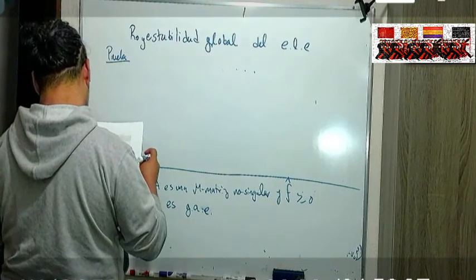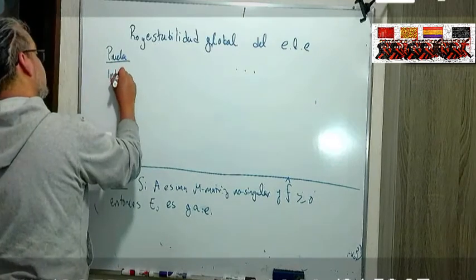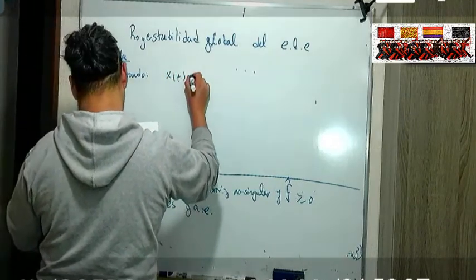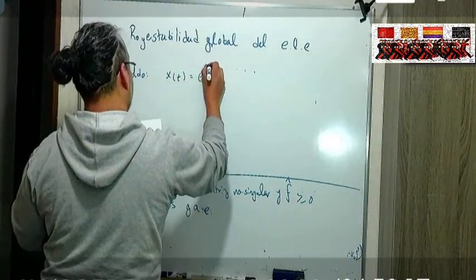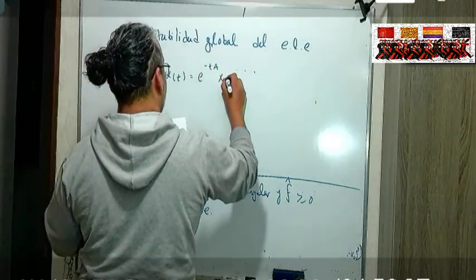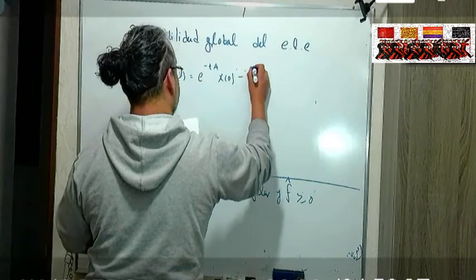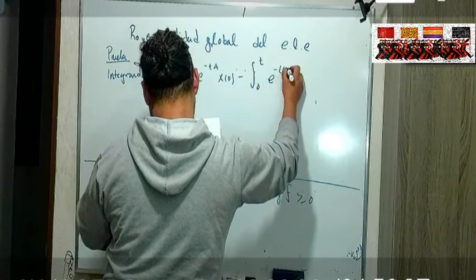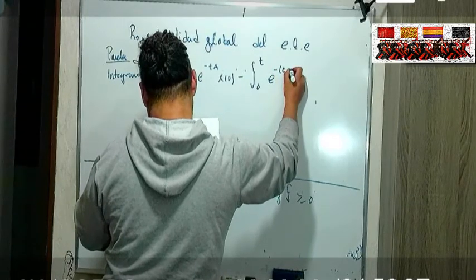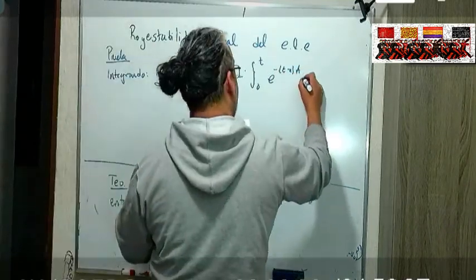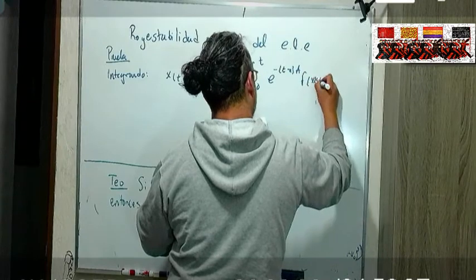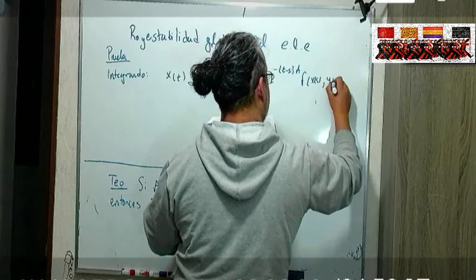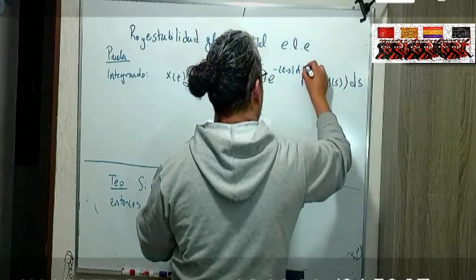Prueba. Entonces integrando tenemos que la x de t se tiene que ver como e a la menos t A por la condición inicial en esas variables y de 0 a t la integral de e a la menos t menos s A por f en x de s, y s integrado respecto a s.